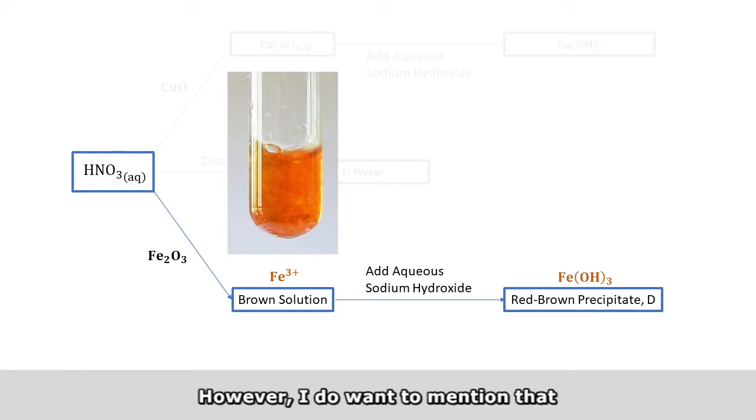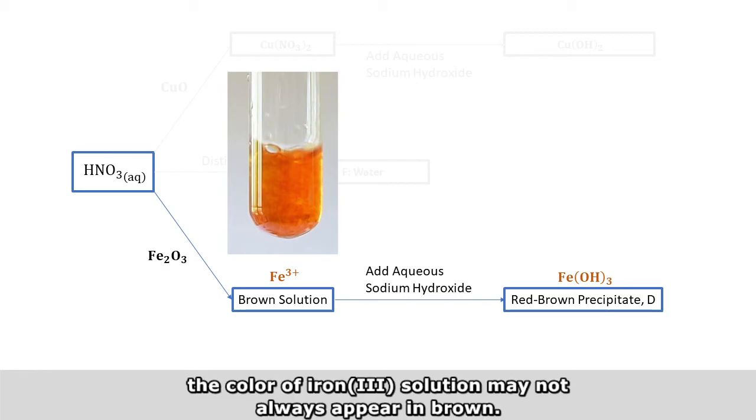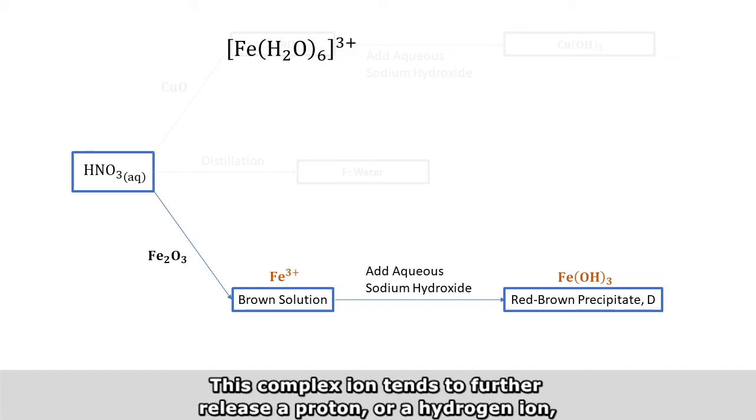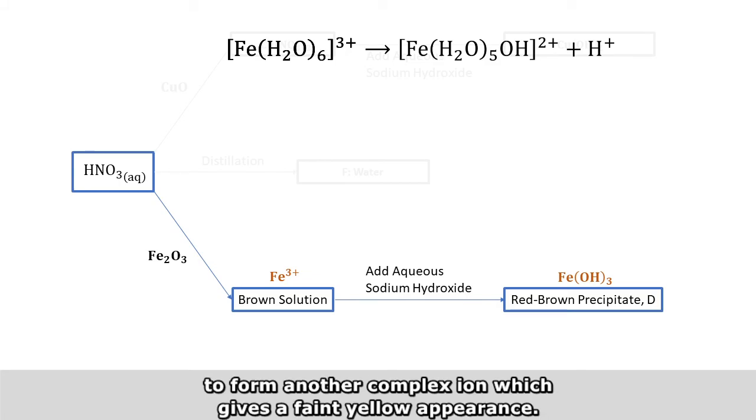However, I do want to mention that the color of iron 3 solution may not always appear in brown. In aqueous form, iron 3 can form a complex ion with 6 water molecules. This complex ion tends to further release a proton, or a hydrogen ion, to form another complex ion, which gives a faint yellow appearance.